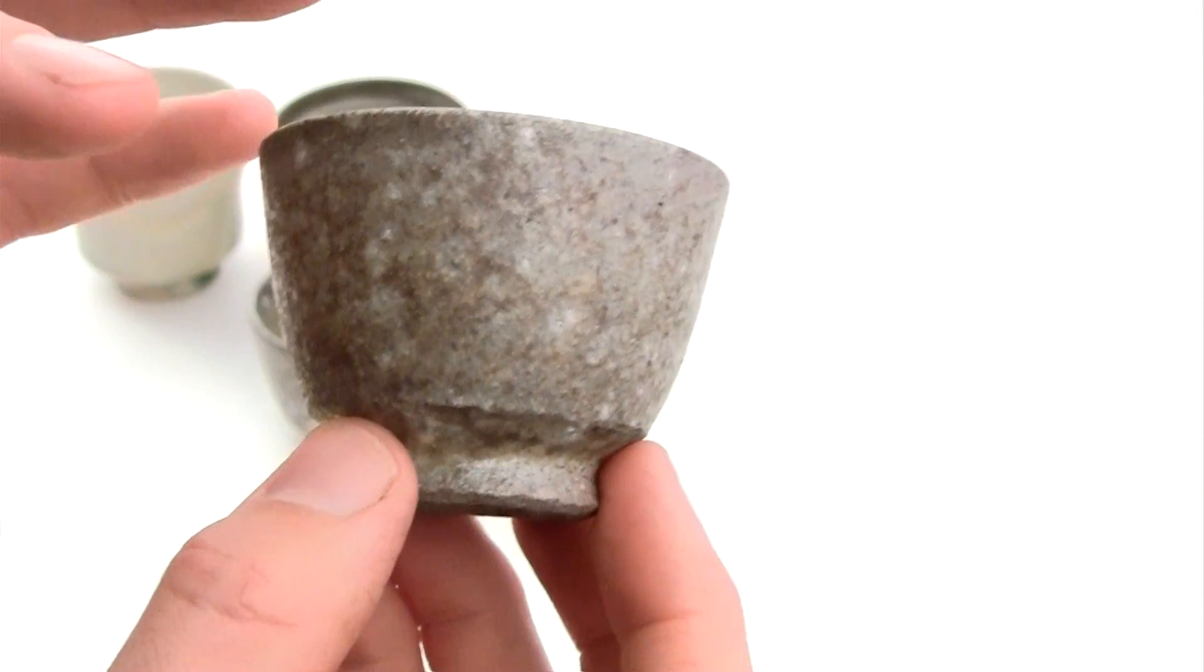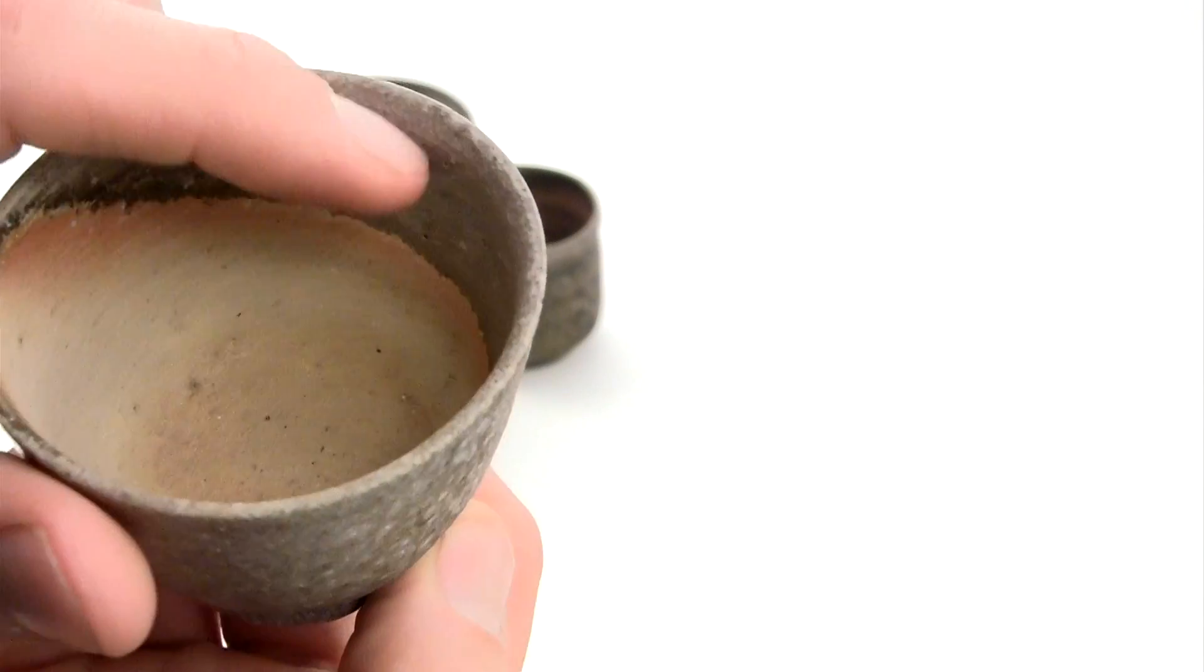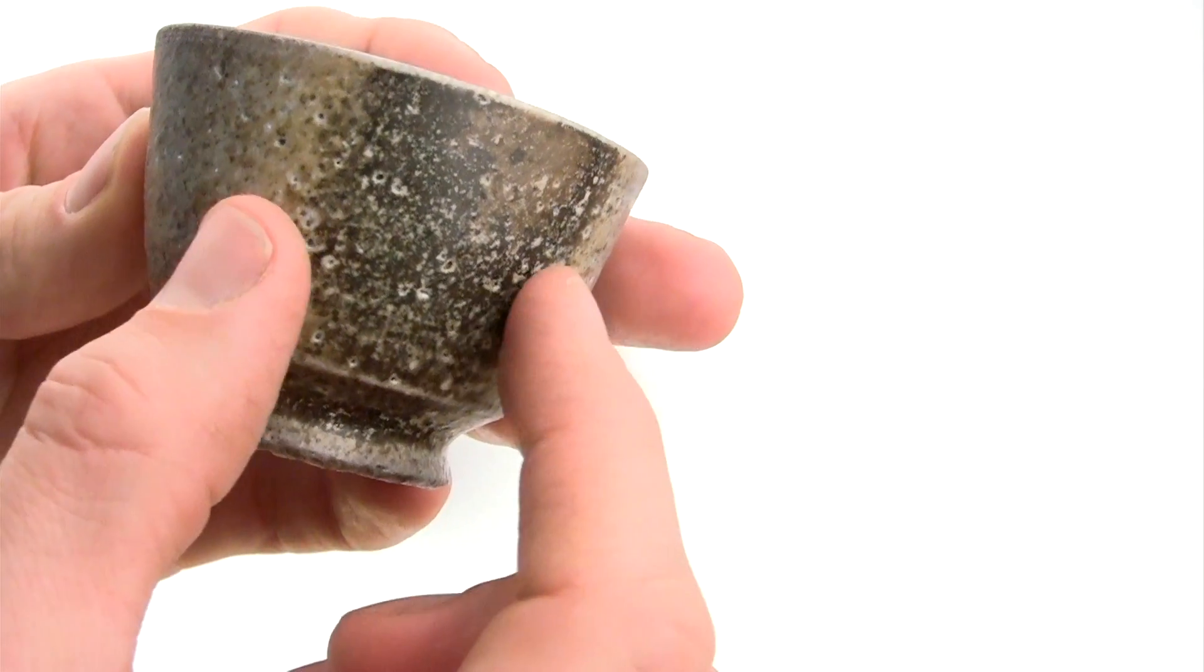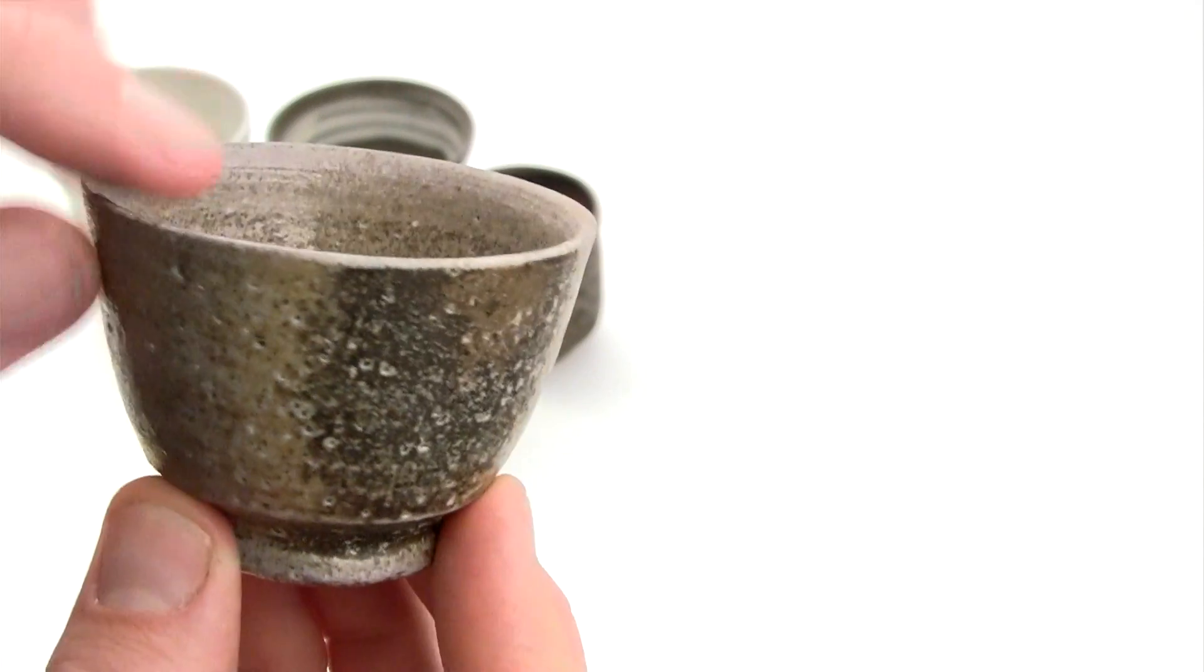But since it's been fired in the very front of the kiln, you can see how the flame almost has touched every part of the pot, at least on the backside here, it's almost blown all the way around the pot before releasing and letting go.